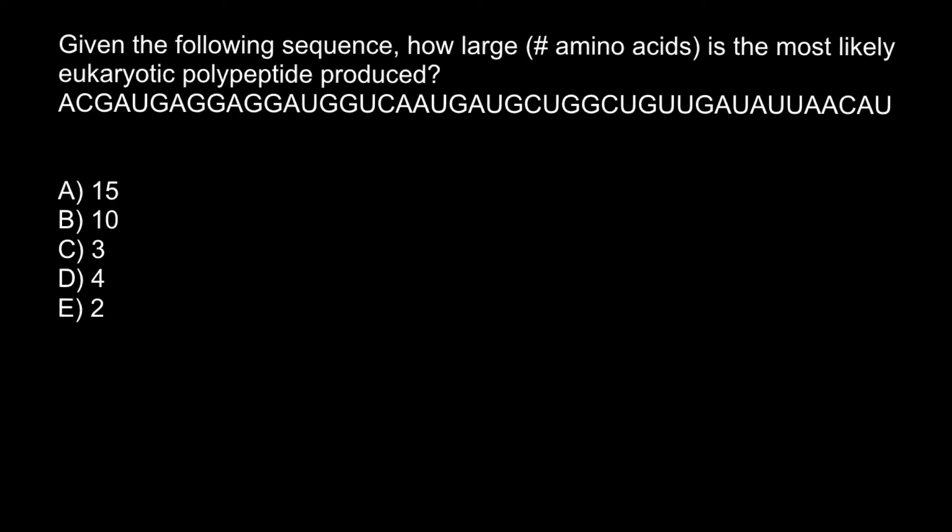Hello and welcome to Nikolai's genetics lessons. Today's problem is: given the following sequence, how large, meaning number of amino acids, is the most likely eukaryotic polypeptide produced? If you would just count the number of trinucleotides...